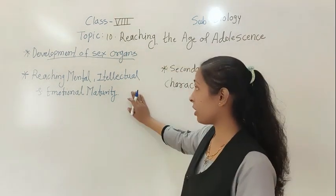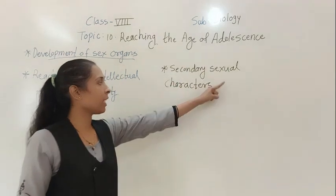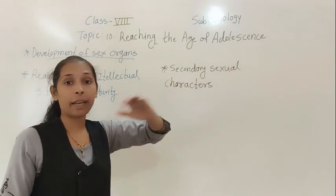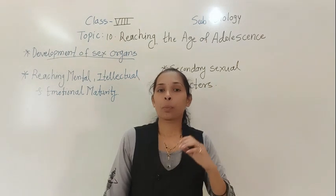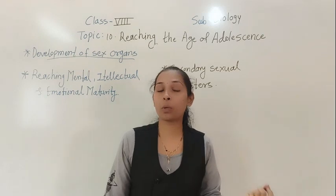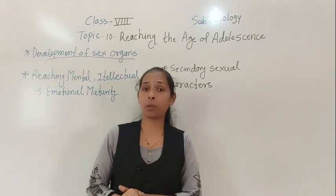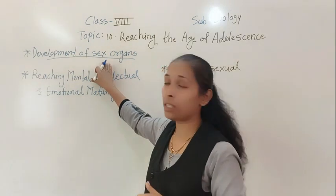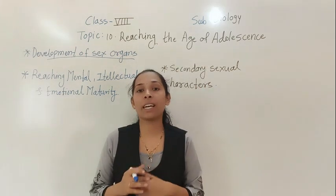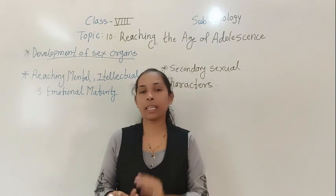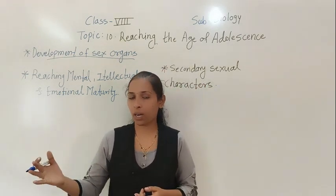Now we will move to the next point — secondary sexual characters. What are secondary sexual characters? In our previous lesson on reproduction in animals, we discussed the male and female reproductive system and reproductive organs. At the age of puberty, development of sex organs happens, and both boys and girls start to produce sex gametes. In males the sex gamete is sperm, while in females the sex gamete is egg or ova.